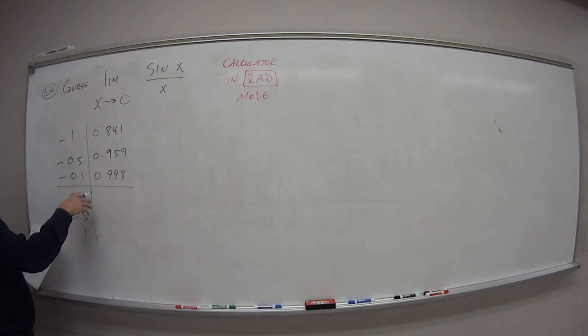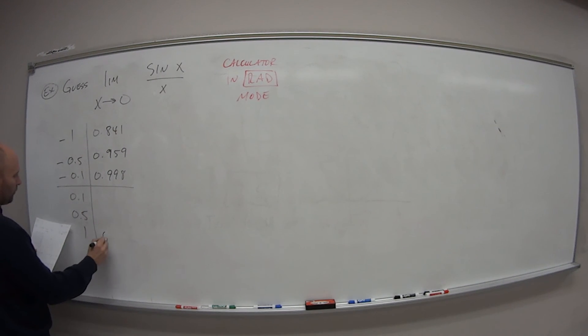Same values for our positive side as well. So at positive 1, 0.841. 0.5, we got 0.959. And at 0.1 positive, 0.998.